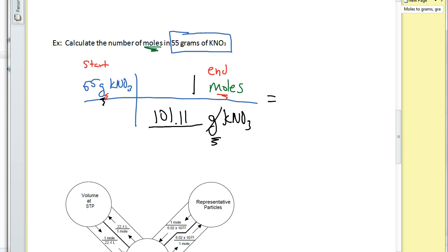Now, this problem, grams cancels with grams. And it becomes a division problem. I punch into my calculator 55 divided by 101.11. And I hit equal. And I get 0.5, we're going to call it 4. I'm going to round it off to two sig figs because my known was two sig figs. And the unit is moles of KNO3.